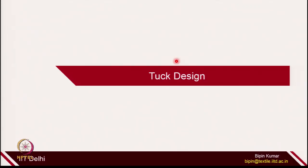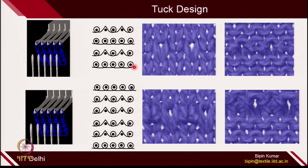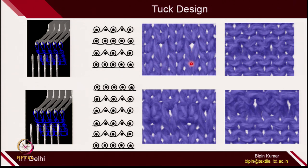Now let's move to tuck design. Tuck is always accompanied with the held loop. In tuck design, on the machine you can put the tuck at any location. The first course makes loops; in the second course, alternating needles are making tuck; the third course all are making loops; the fourth course alternating needles are making tuck again. In one of the columns, the tuck is there, and because of that certain loops become bigger — this is the tuck on the back side.